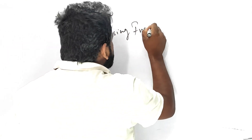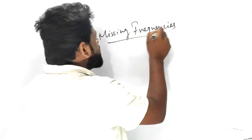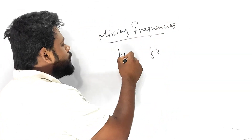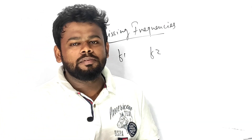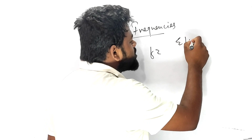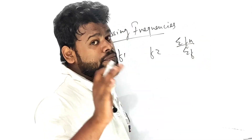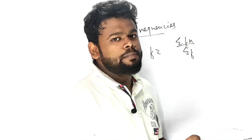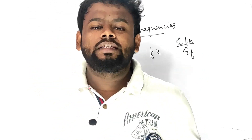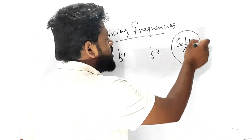Missing frequency is very important. Suppose you have f1 and f2 — f1 would be given and you have to find the missing frequencies. Many people solve this using summation of fx divided by summation of f, which is the direct mean method. That is correct, but I would recommend using the assumed mean method.